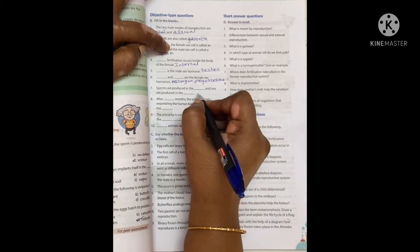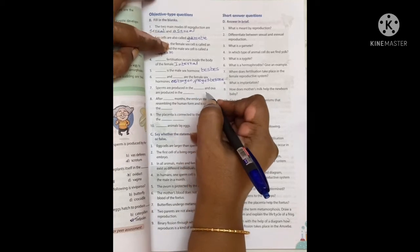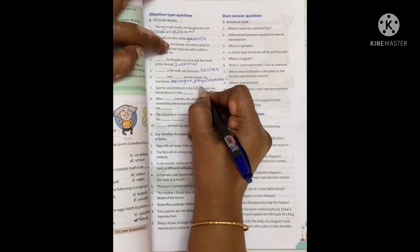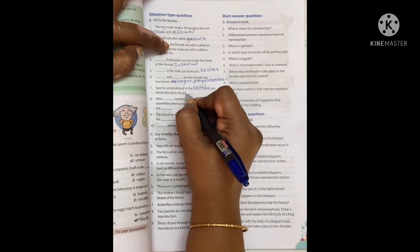Sperms are produced in the testes and ova are produced in the ovaries.